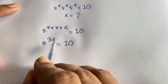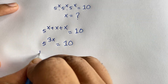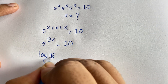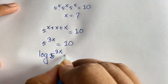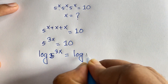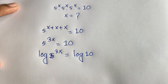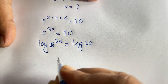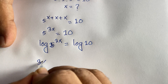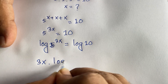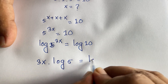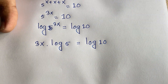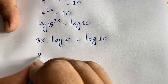Now, to find the value of x, I apply the natural log to both sides. So log of 5 to the power 3x is equal to log 10. The exponent can move to the front, so it will be 3x times log 5 is equal to log 10.